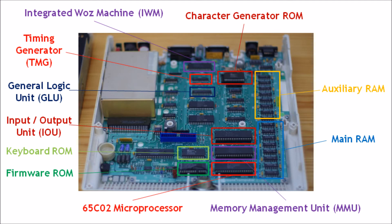Going clockwise from the top, we have the character generator ROM, the auxiliary RAM, the main RAM, the memory management unit, the CPU which is a 65C02 microprocessor, the firmware ROM, the keyboard ROM, the input-output unit, the general logic unit, the timing generator, and the integrated WOZ machine.